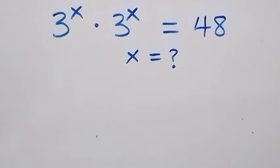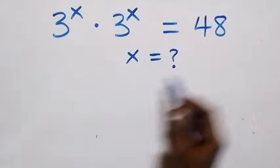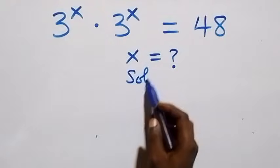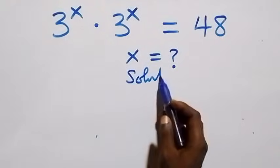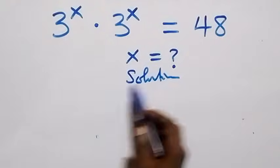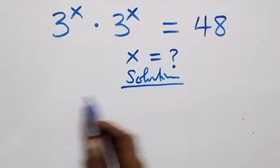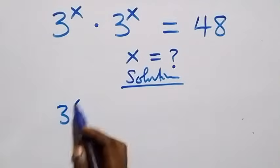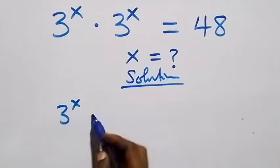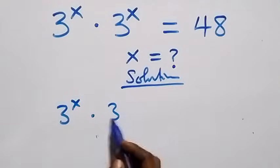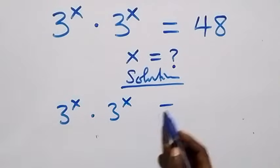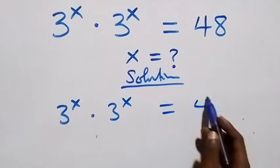Hello, you're welcome. Here we solve a nice exponential equation. What we have is 3 raised to power x times 3 raised to power x equals 48.